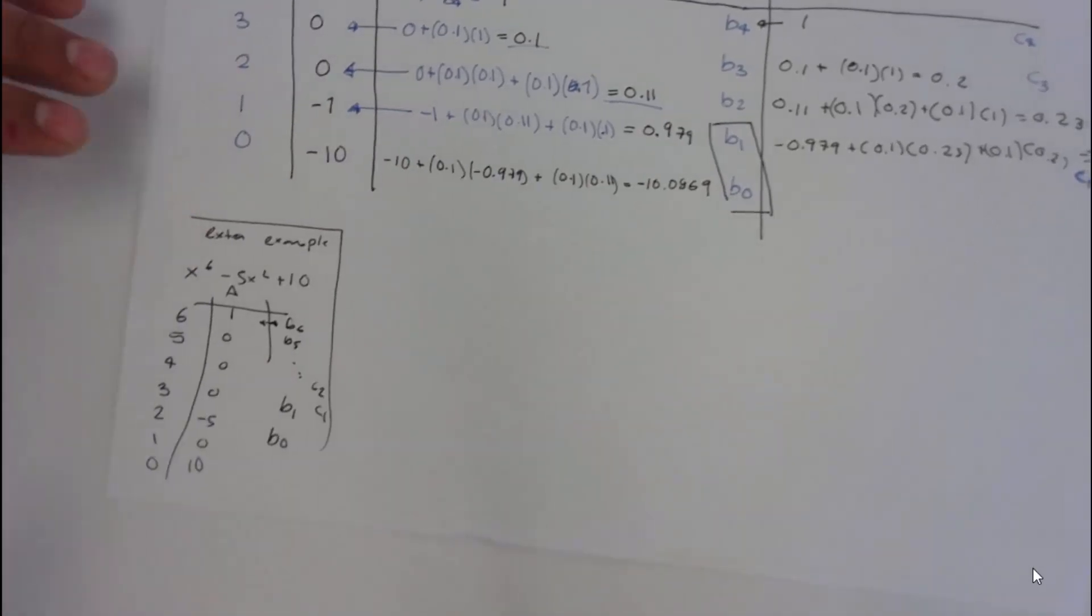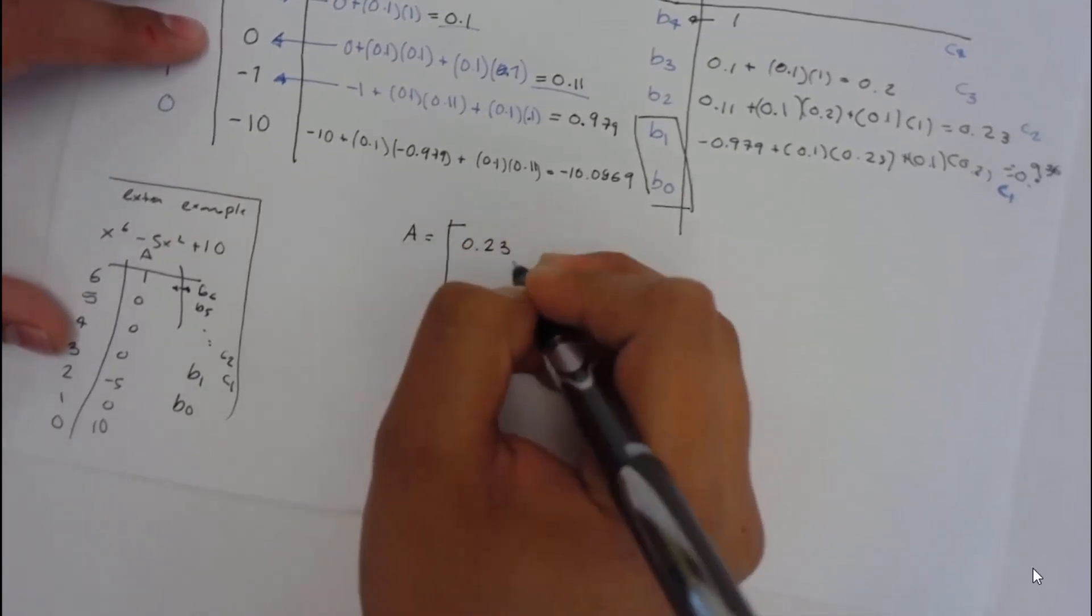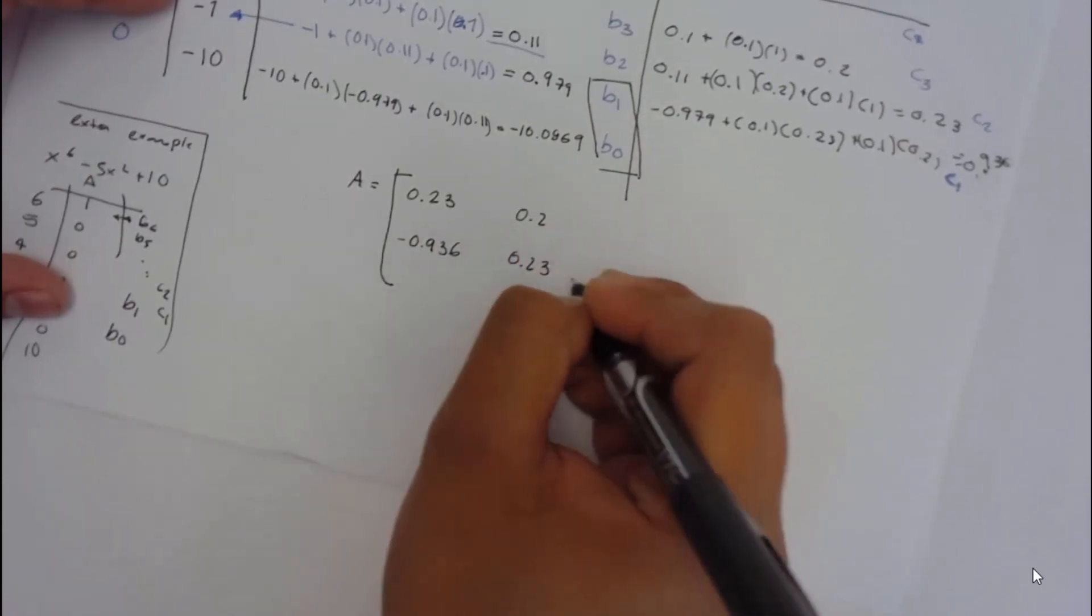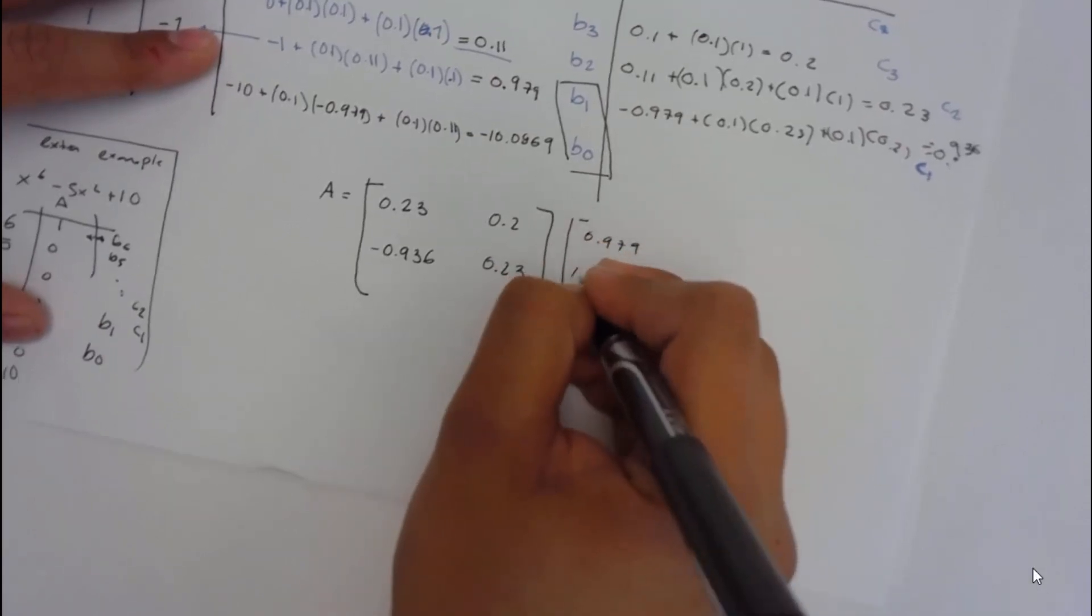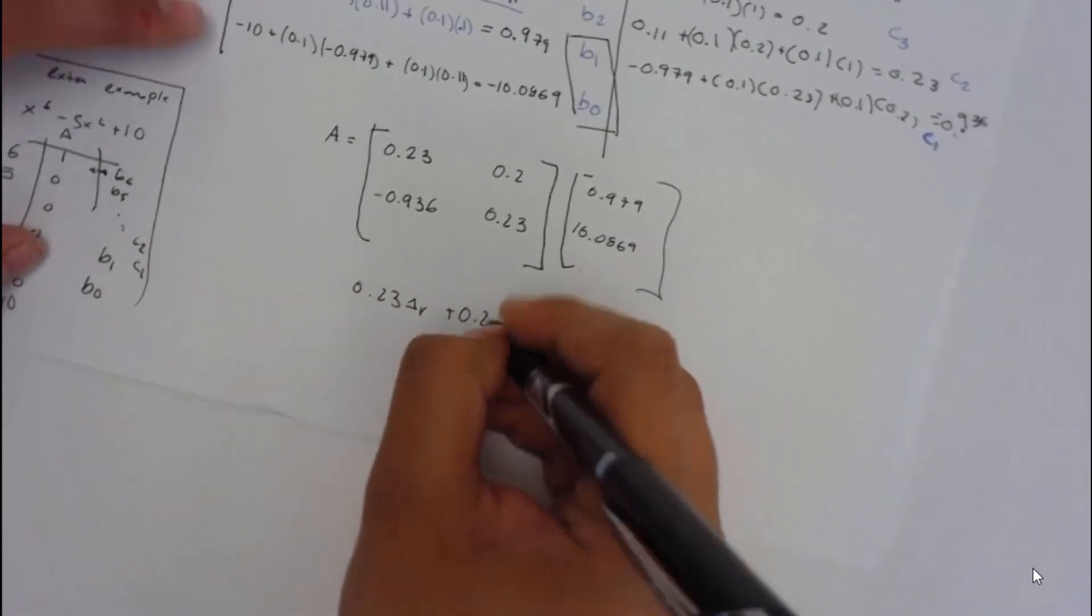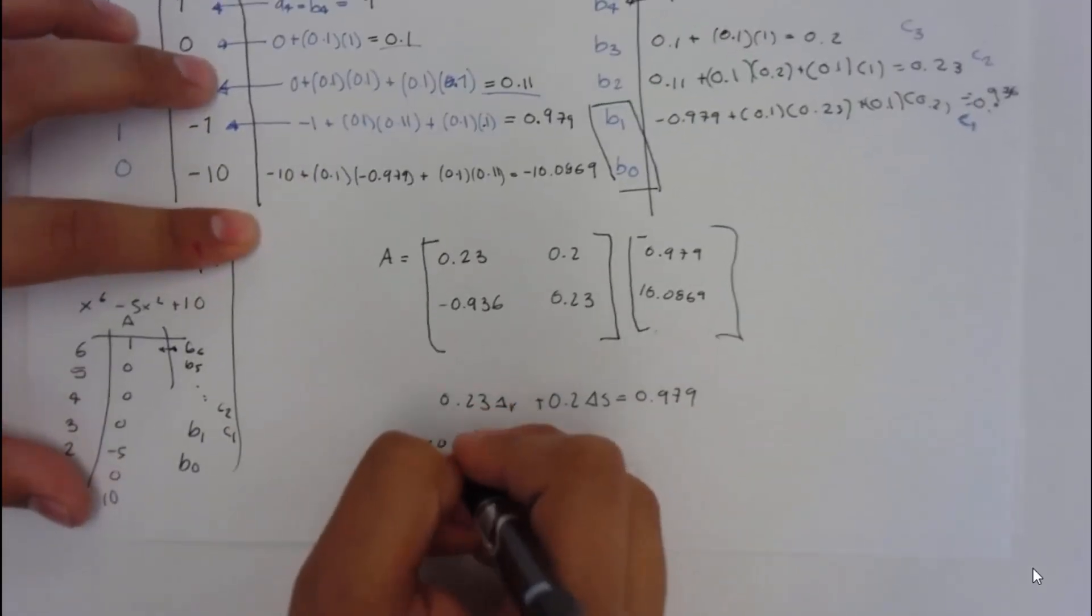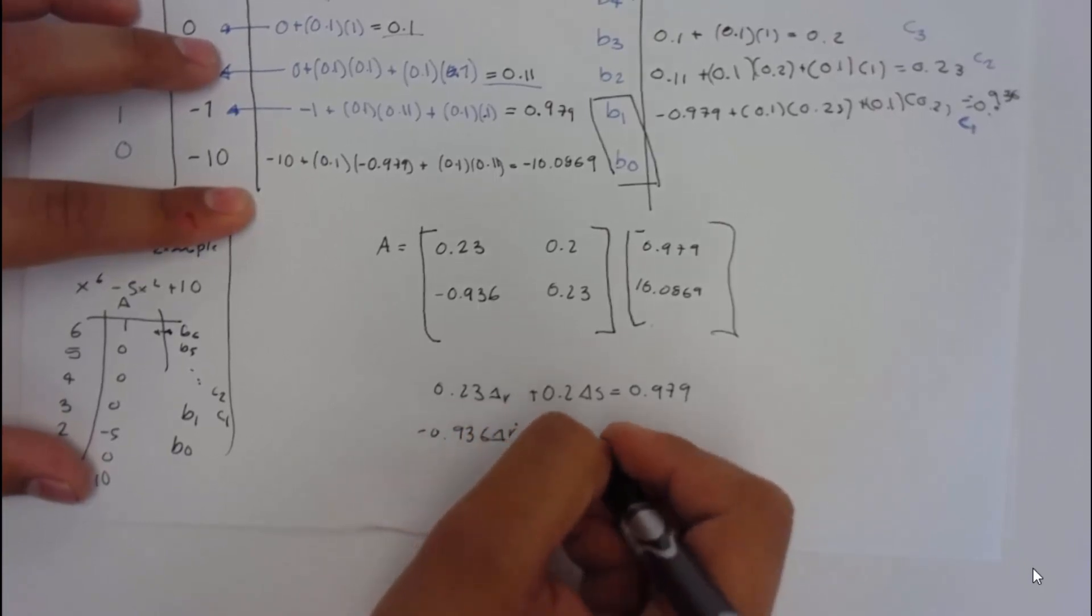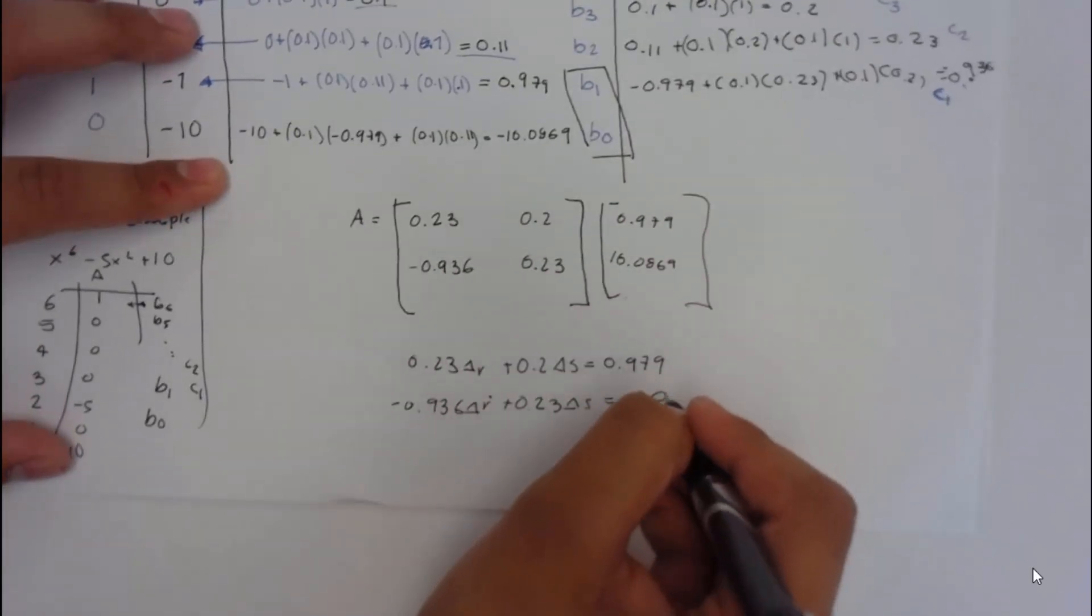b equal to 0.23, 0.936, 0.2, 0.23. This will be equal to 0.9, this is because of the equations. Basically, this will be 0.23 delta r, plus 0.2 delta s, is equal to 0.9, which is b1, and negative 0.936 delta r, plus 0.23 delta s, is going to be equal to 10.00869, again, because of the equations.